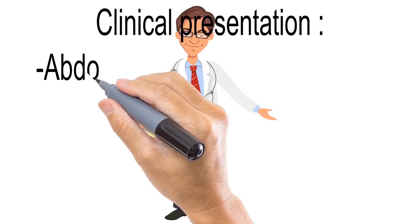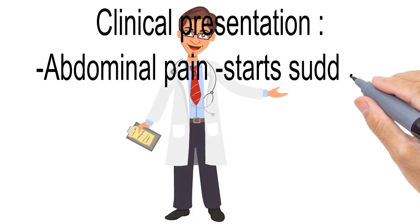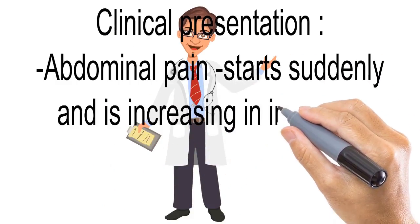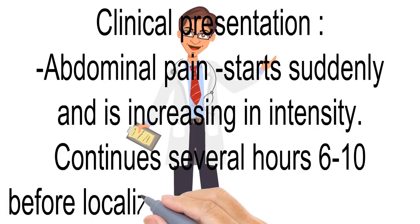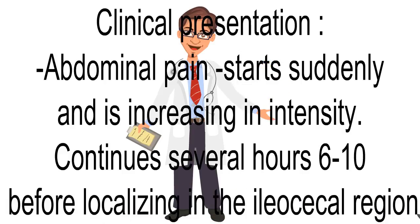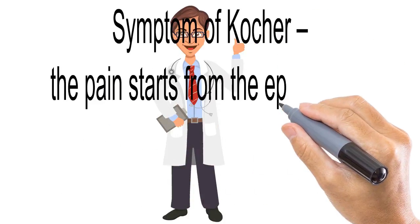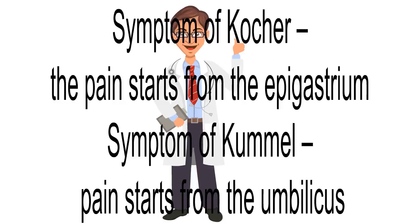Clinical presentation: the clinical presentation of acute appendicitis is determined by the morphological changes and the location of the appendix. Abdominal pain is a constant symptom. Appendicular pain starts suddenly and increases in intensity. In children, the pain encompasses the whole abdomen and continues for several hours — 6 to 10 — before localizing in the ileocecal region. Usually the pain starts from the epigastrium or the umbilicus and after several hours localizes in the ileocecal region. As a rule, appendicular pain does not irradiate. Appendicular pain usually starts at night or early in the morning due to the dominant parasympathetic function of the vagus nerve.